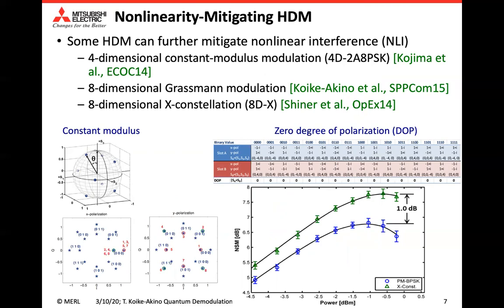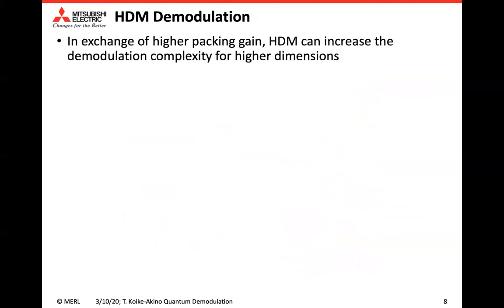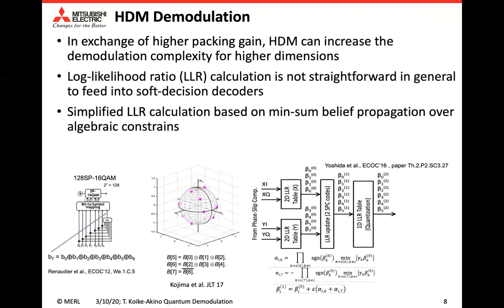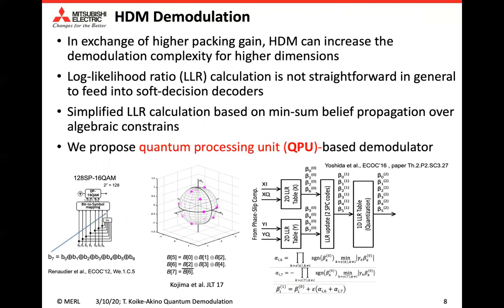However, HDM has a drawback in complexity in general. In particular, if we want to calculate LLR, we need exponentially large constellation points. So this NP-hard problem leads people to use simplified methods, for example, message belief propagation. In this talk, we propose a new framework which uses a quantum processing unit, QPU.